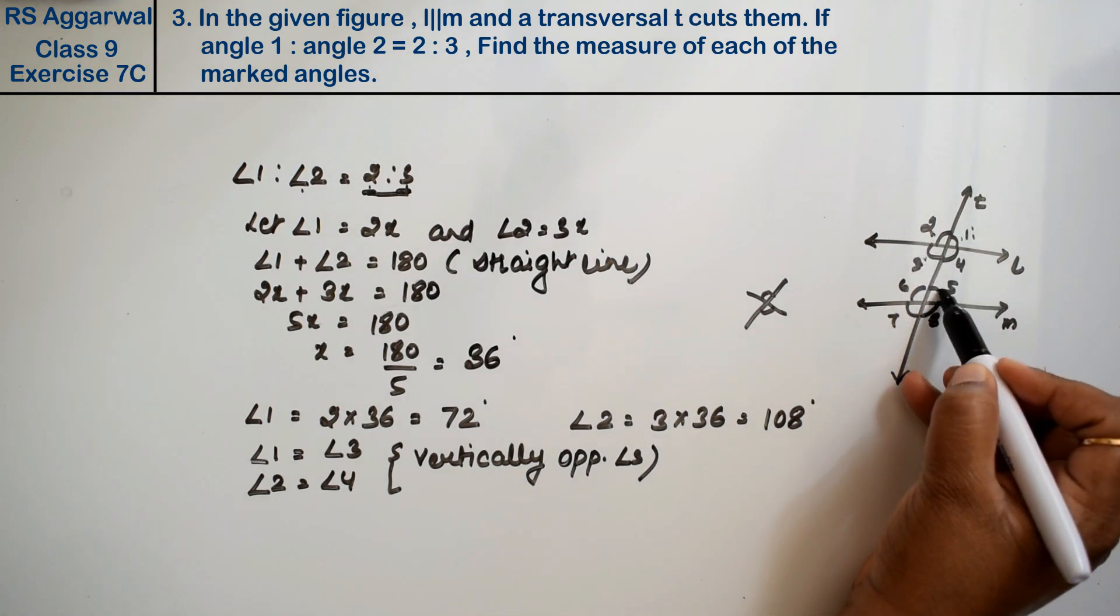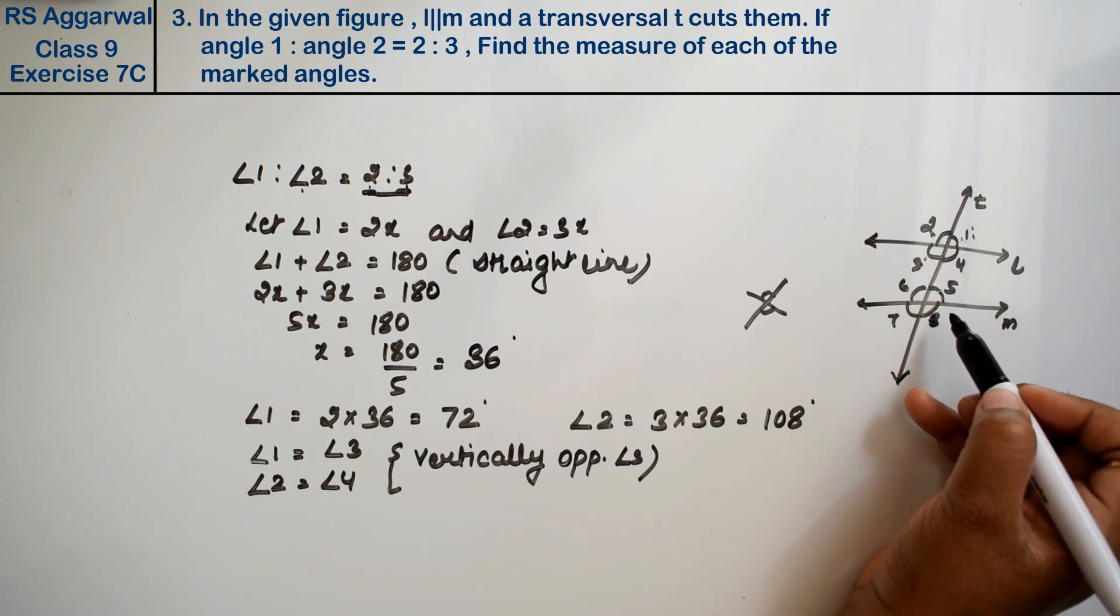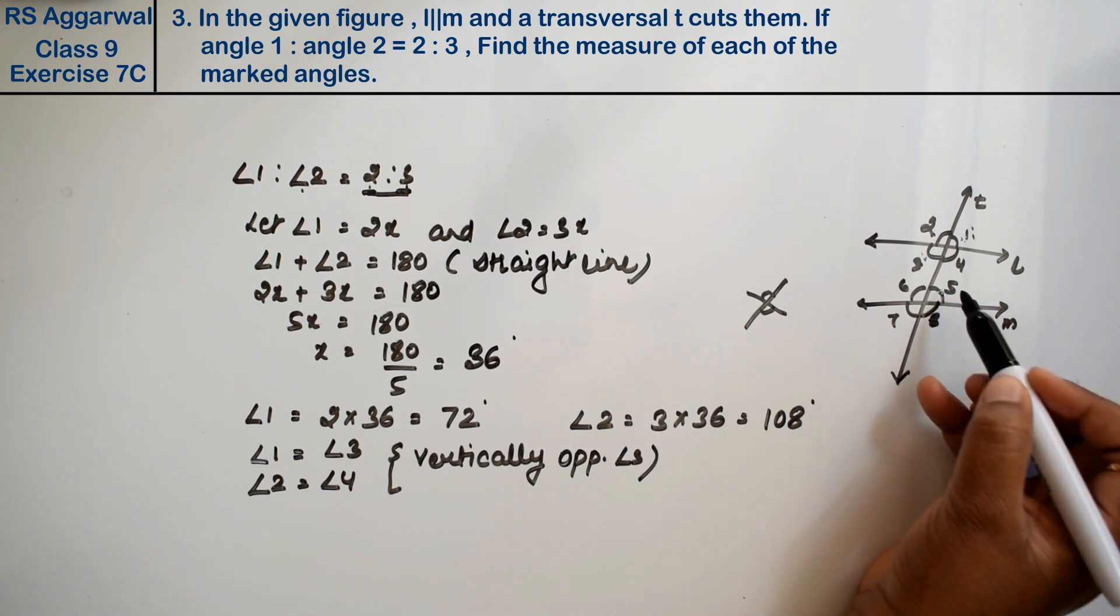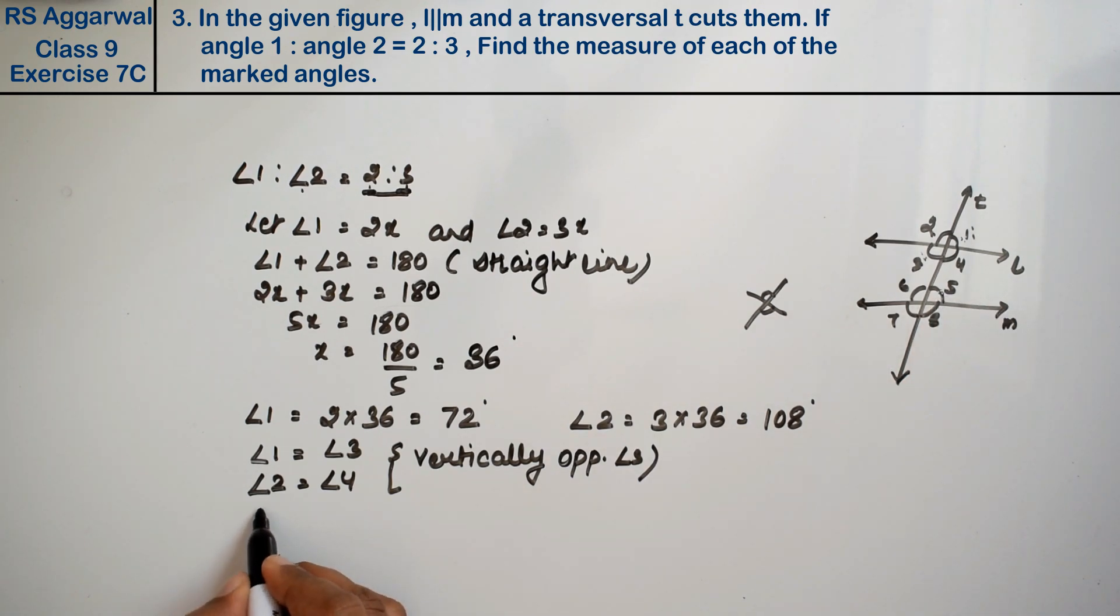Now we have these four angles. Now angle 3 is equal to angle 5 and angle 4 is equal to angle 6. Why? Because these are the alternate angles.